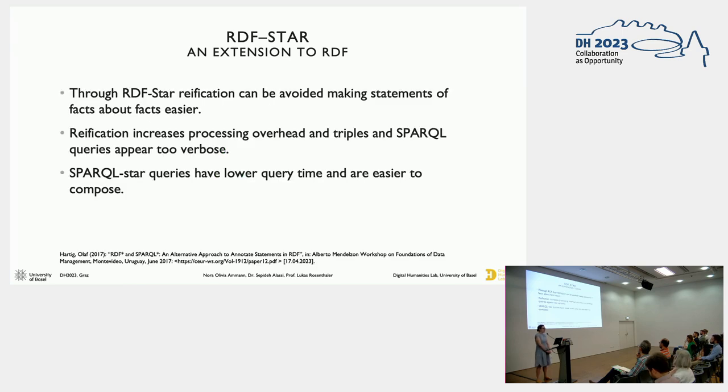So with RDF star, reification, which was mentioned earlier, can be avoided, because making statements about facts are much easier. Reification would increase the processing overhead, and triples and SPARQL queries would be very verbose. SPARQL star queries then have lower query times and are easier to compose. Therefore, this is really ideal for a manuscript which contains a lot of metadata.